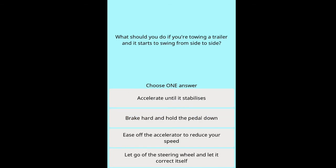Question: What should you do if you're towing a trailer and it starts to swing from side to side? Options: accelerate until it stabilizes, brake hard and hold the pedal down, ease off the accelerator to reduce your speed, let go of the steering wheel and let it correct itself.